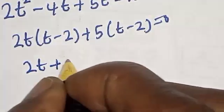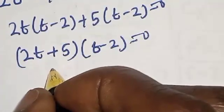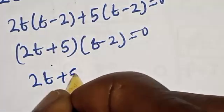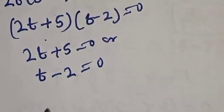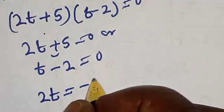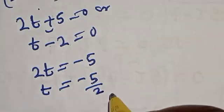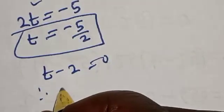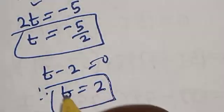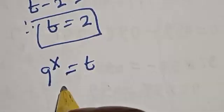We have two cases: 2t plus 5 is equal to 0, or t minus 2 is equal to 0. From t minus 2 equals 0, t equals 2. From 2t plus 5 equals 0, t equals negative 5 over 2.